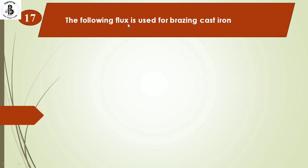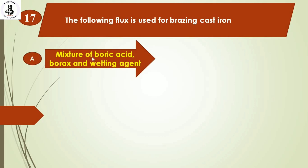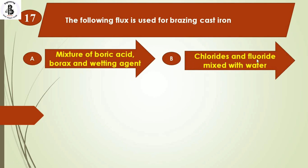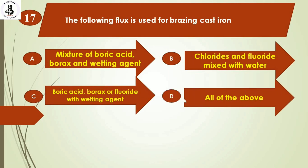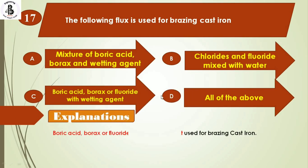The following flux is used for brazing cast iron: Option A: mixture of boric acid, borax and wetting agent. Option B: chlorides and fluorides mixed with water. Option C: boric acid, borax or fluoride with wetting agent. Option D: all of the above. Boric acid, borax or fluoride with wetting agent is used for brazing cast iron. So the answer is option C.